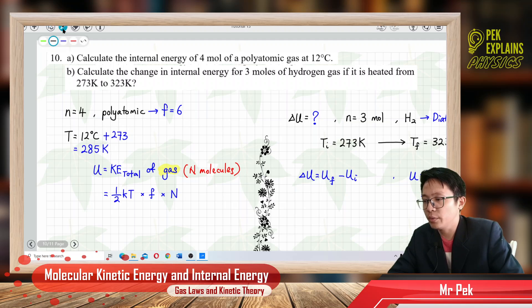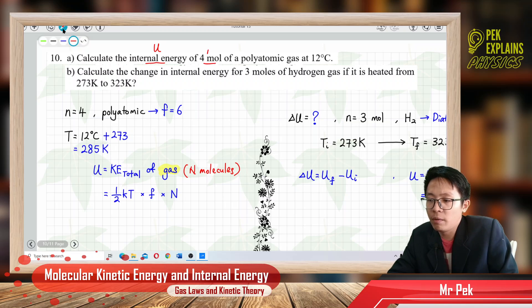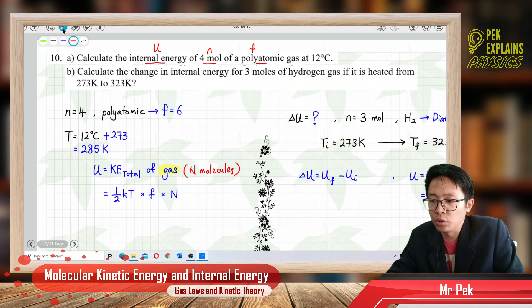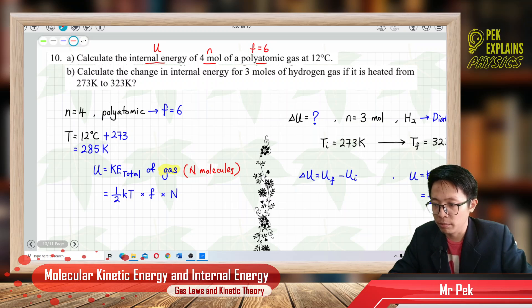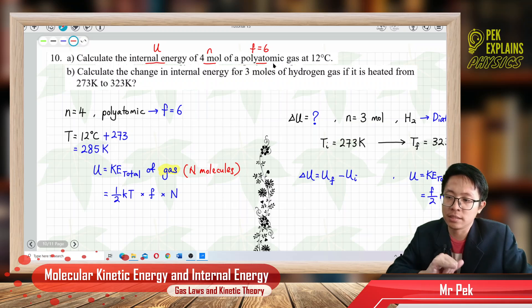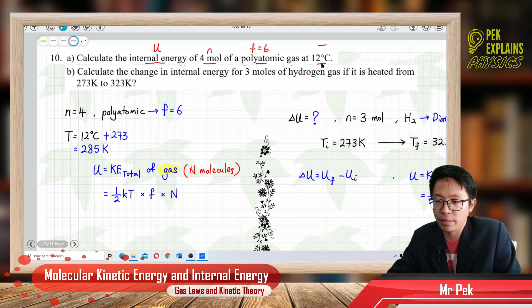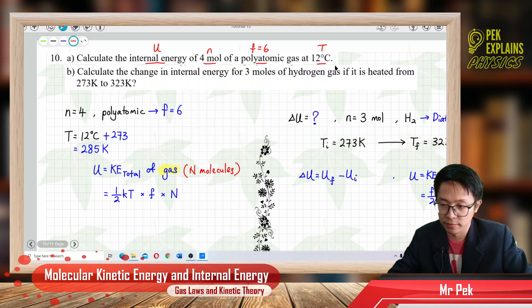The information we have: the question asks us to find the internal energy, which is U. We have the number of moles. We know it is a polyatomic gas, which has a total degree of freedom of 6. And we have the temperature in degrees Celsius, but we have to change it to Kelvin.